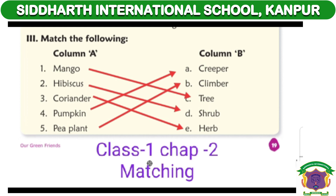Now we will do the matching. Draw the line. First number matches to C. Second number matches to D. Third number matches to E. Fourth number matches to A.